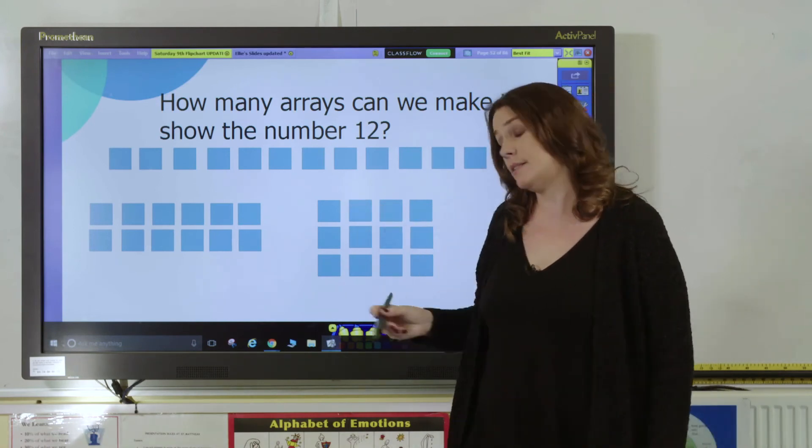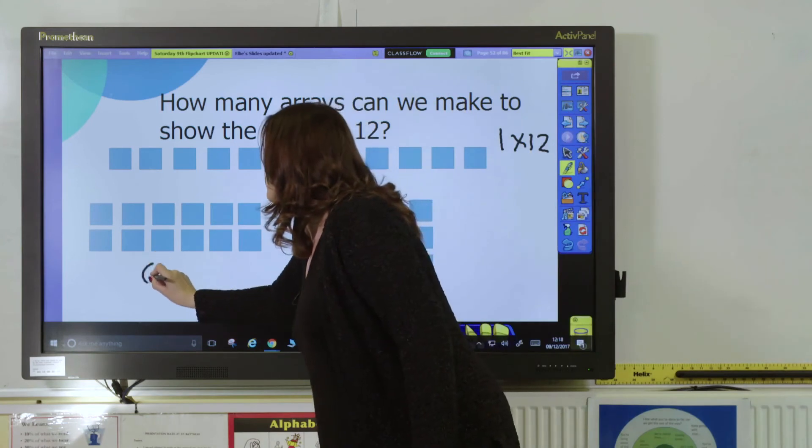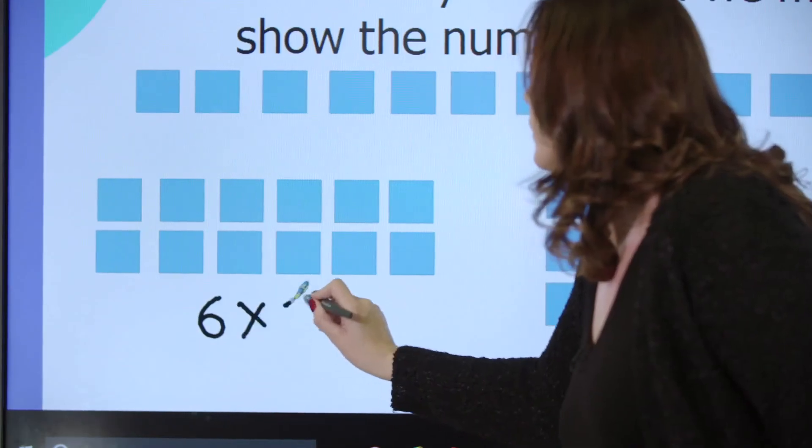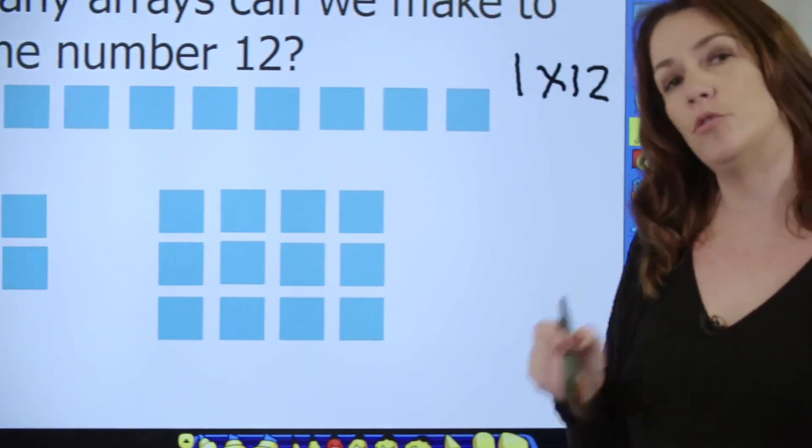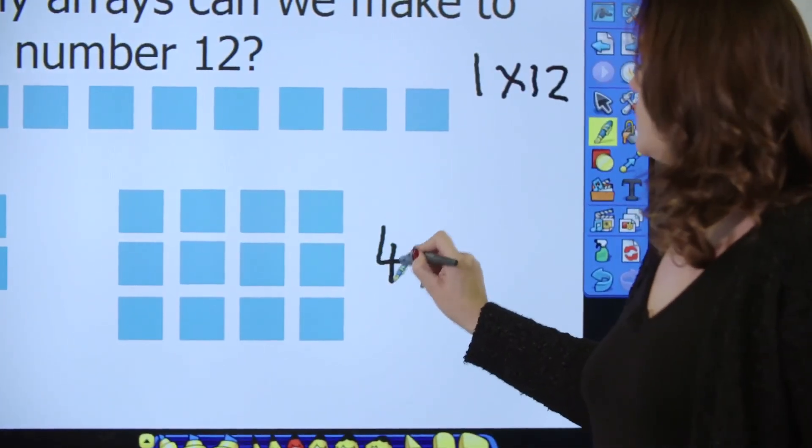This array represents 6 groups of 2, or 2 groups of 6. And this array here represents 4 groups of 3, so 4 times 3.